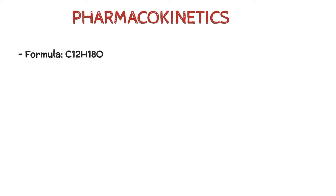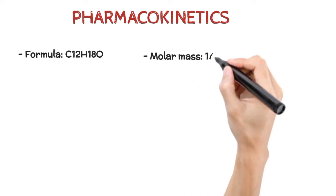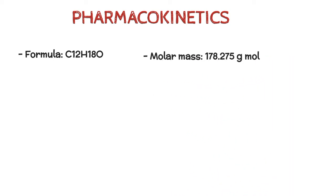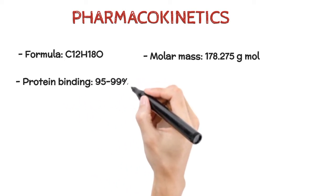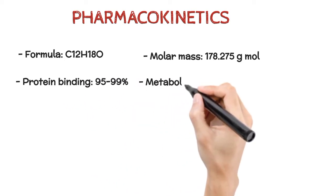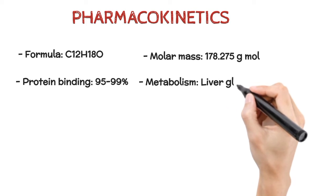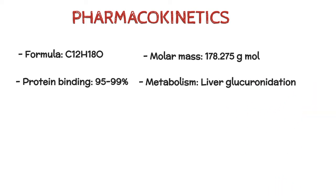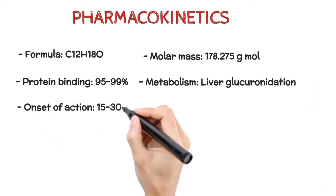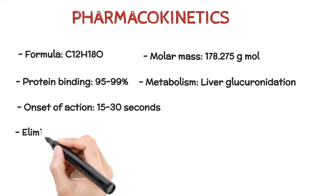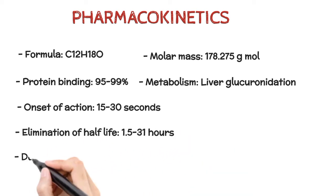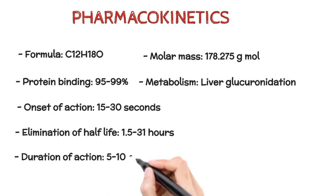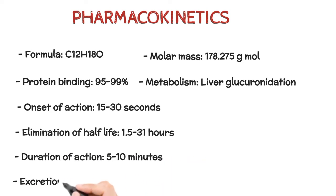Pharmacokinetics. Formula: C12H18O. Molar mass: 178.275 g/mol. Protein binding: 95–99%. Metabolism: liver glucuronidation. Onset of action: 15–30 seconds. Elimination half-life: 1.5–31 hours. Duration of action: 5–10 minutes. Excretion: renal.